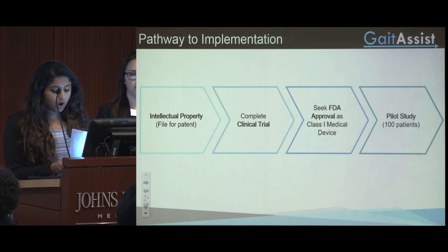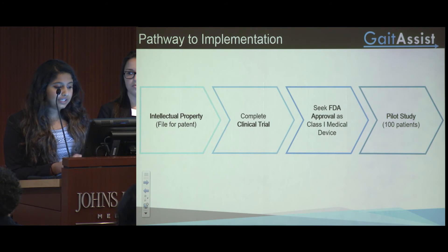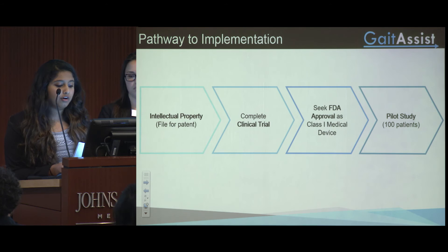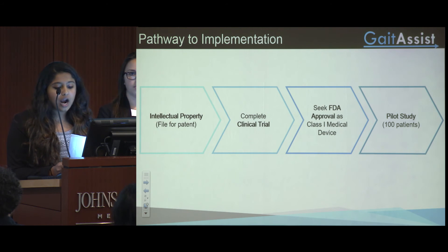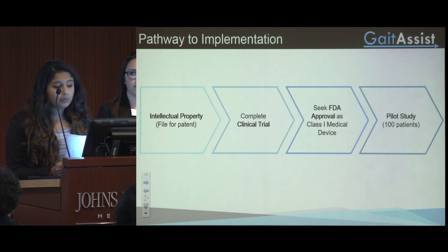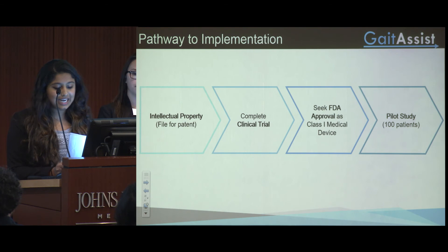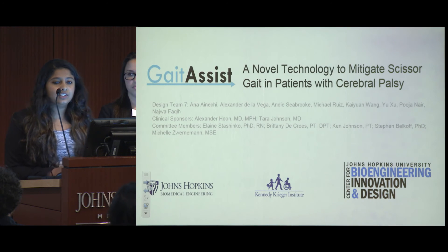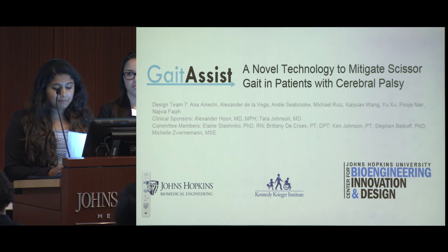I would like to conclude by talking you through our future plans and our pathway to implementation. We received a provisional patent in May 2015 and are filing for a full patent for our device. We aim to complete the clinical trial and then seek FDA approval as a Class 1 medical device. After this, we would want to launch a pilot study of about 100 patients to see how the device functions in daily use. To continue with this project, we are seeking funding. We believe that Gait Assist can improve the lives of scissor gait patients one step at a time. Thank you for listening.